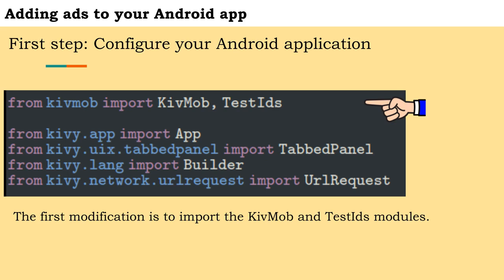Ad units are containers you place in your apps to show ads to users. Ad units send ad requests to AdMob, then display the ads they receive to fill the request. When you create an ad unit, you assign it an ad format and ad type. The demo ad units are not associated with your AdMob account, so there's no risk of your account generating invalid traffic when using these ad units. Make sure you replace these IDs with your own ad unit ID before publishing your app.